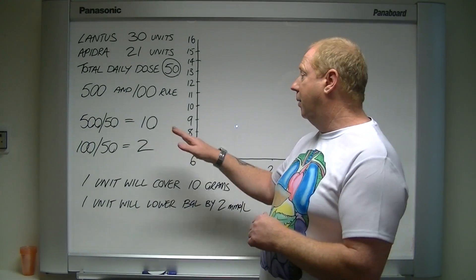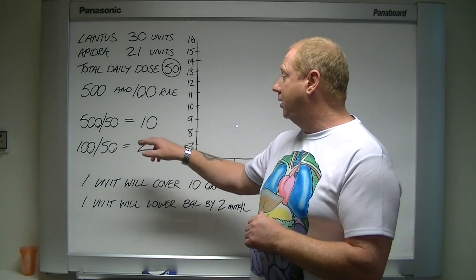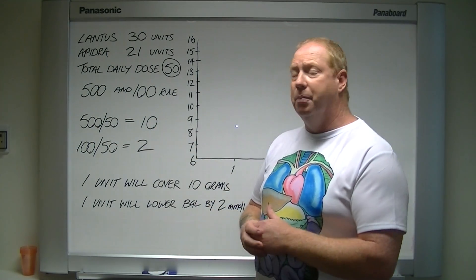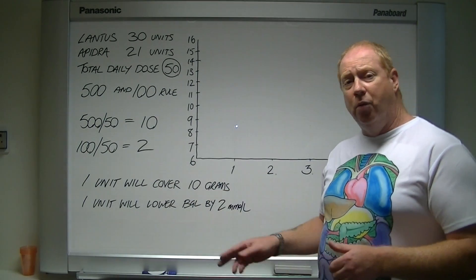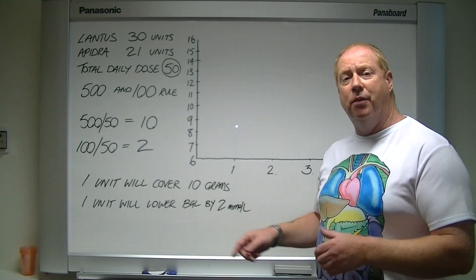That's just an example for you by the way. So you get your total daily dose of insulin, 100 divided by 50 equals 2. So what does that mean? That means one unit will cover 10 grams of carbohydrate.